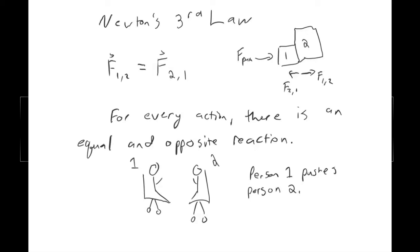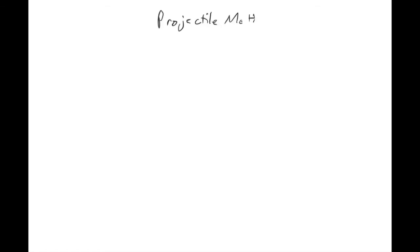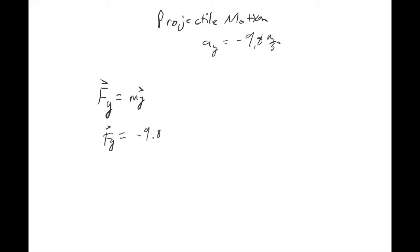Those are Newton's three laws. Let's see some examples from stuff we've already worked on. We've already done projectile motion, and when we were doing that, we always said the acceleration in the y direction is negative 9.8, due to gravity.